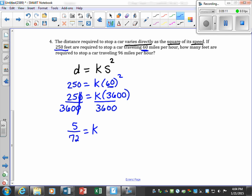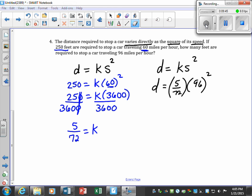Now once we have our k, we always write our equation again, and we plug in our k. Then we go back up to our problem and see what's left to find. How many feet are required to stop a car traveling 96 miles per hour? So they give us speed. They tell us our speed is 96, and we put it in our formula, and we say, find the distance.